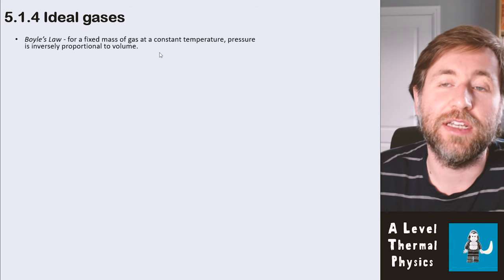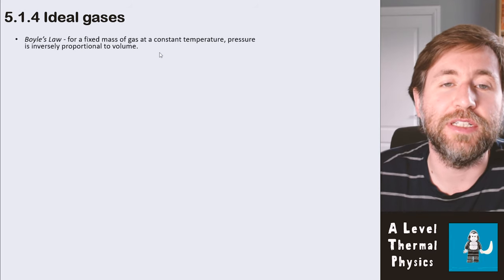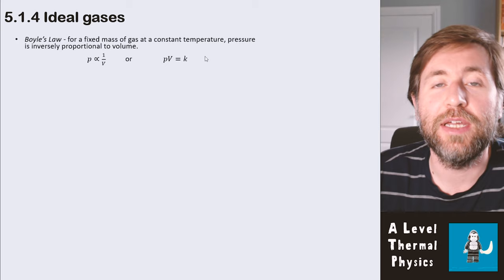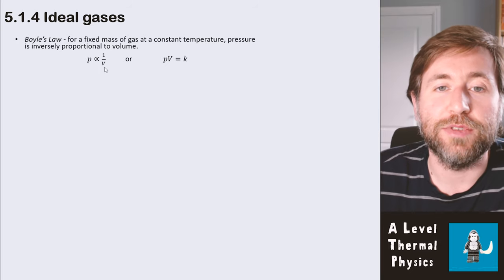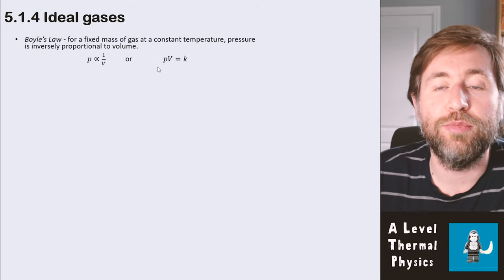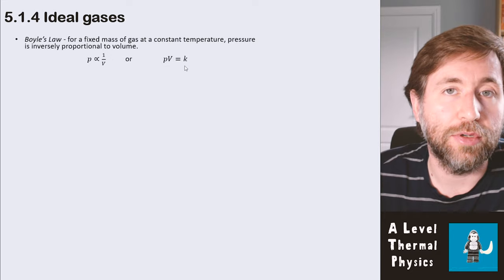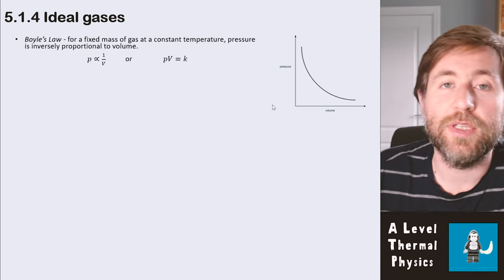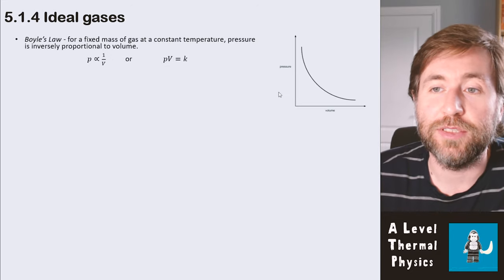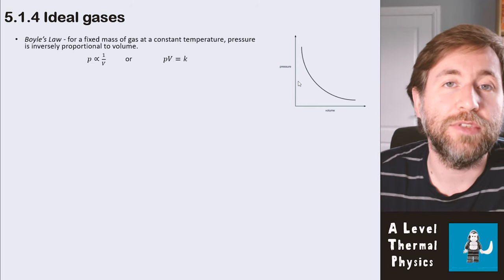For a fixed mass of gas at a constant temperature, pressure is inversely proportional to volume. There are two ways to write that: pressure is inversely proportional to volume, or pressure times volume equals a constant. They are the same thing. If you were to do this experiment, you'd get a graph that looks something like this. If you double pressure, you half the volume.